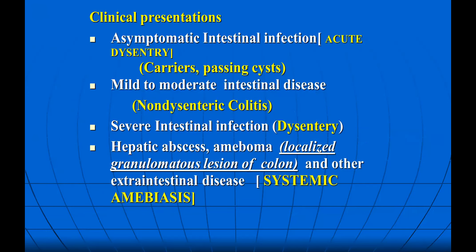Clinical presentations include: asymptomatic intestinal infection and carrier state with passing cysts. Mild to moderate intestinal disease causes non-dysenteric colitis, which is inflammation in your colon. Severe intestinal infection includes dysentery and hepatic abscess. Amoeboma is a localized lesion in the colon. Extra-intestinal disease is known as systemic amoebiasis. These are the various classifications according to the severity of the disease.